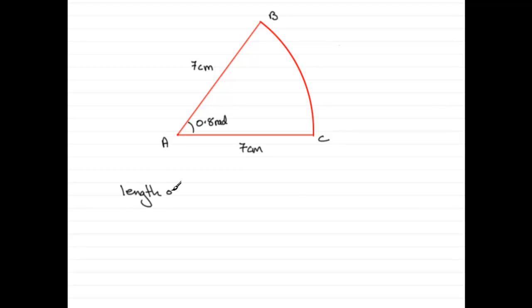First of all, length of arc BC. Well, this is easy because it's going to be a part of the circumference, a fraction of the circumference of the complete circle.